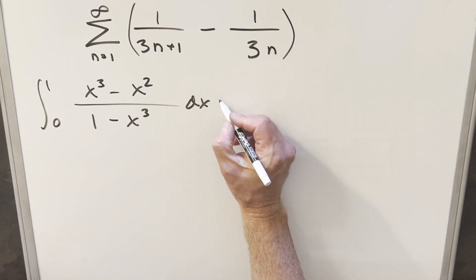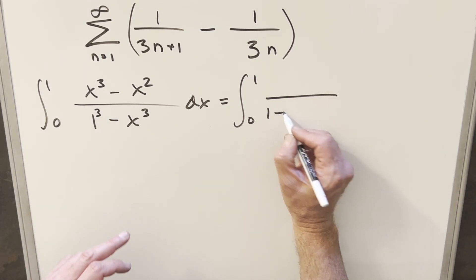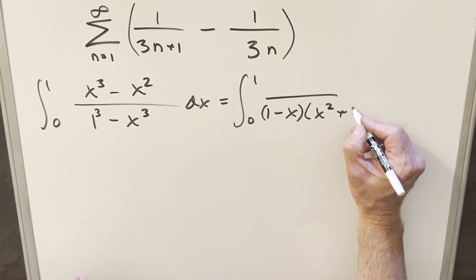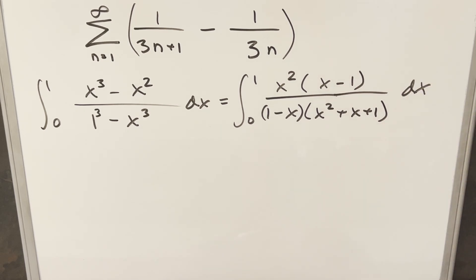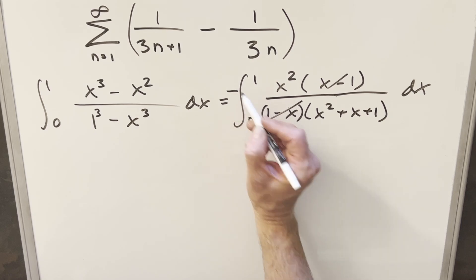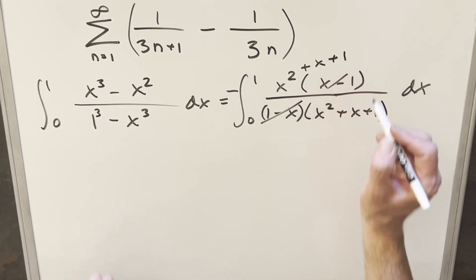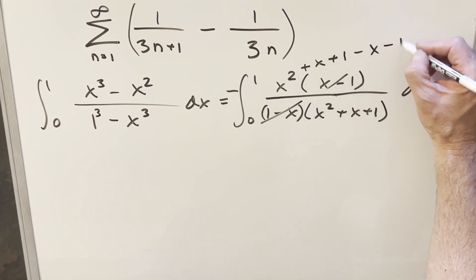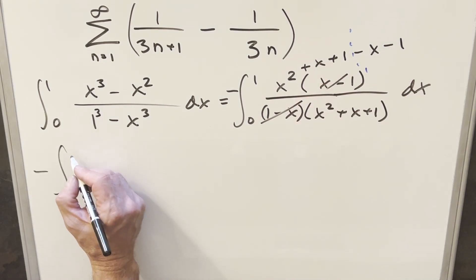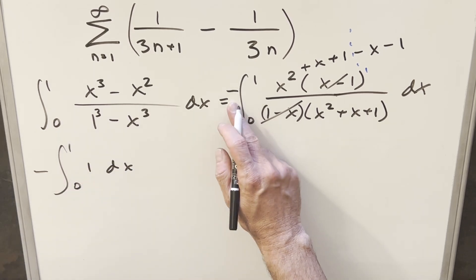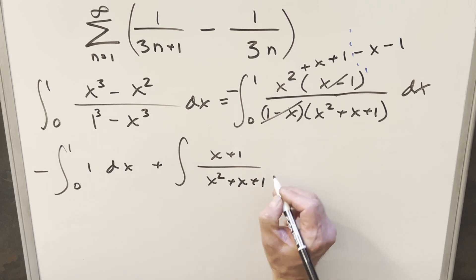Now let's do some factoring on the numerator and denominator. The denominator 1 minus x cubed is a difference of two cubes, which factors as (1 minus x)(x squared plus x plus 1). In the numerator, factor out x squared to get x squared times (x minus 1). We can cancel (x minus 1) with (1 minus x), bringing a minus sign out front. Then to handle the remaining fraction, I add and subtract (x plus 1) in the numerator to split this into two integrals: one that is simply 1, and a second with (x plus 1) over (x squared plus x plus 1).